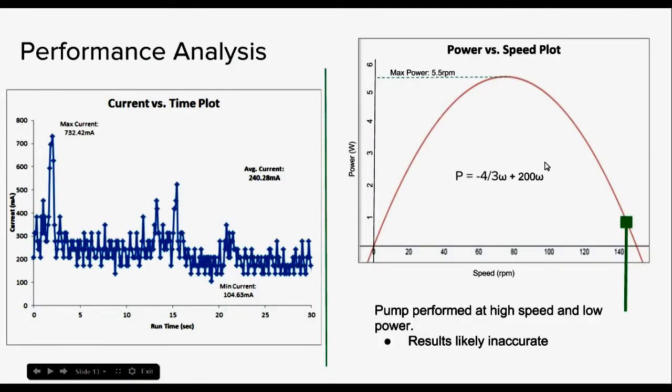This is a performance analysis for our water pump. So what we see on the left is a current versus time plot over the course of 30 seconds. And the average current was about 240 milliamps. The max current when the pump really began pumping water was 700 milliamps, and then minimum current 104 milliamps. When I made the power versus speed plot and calculated where our power would have been, it was pretty low around 1 watt. And the speed at at least 150 RPMs.